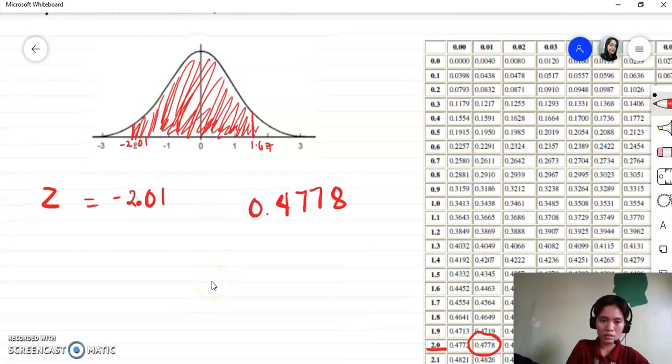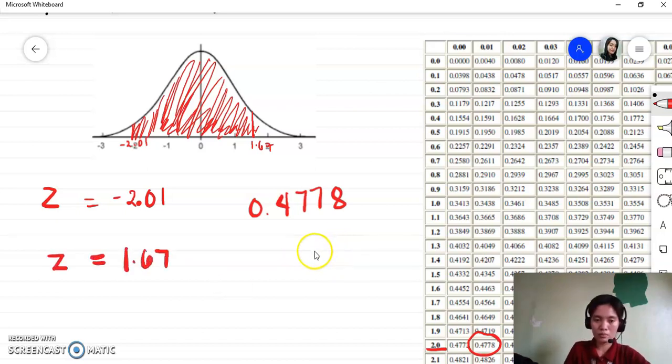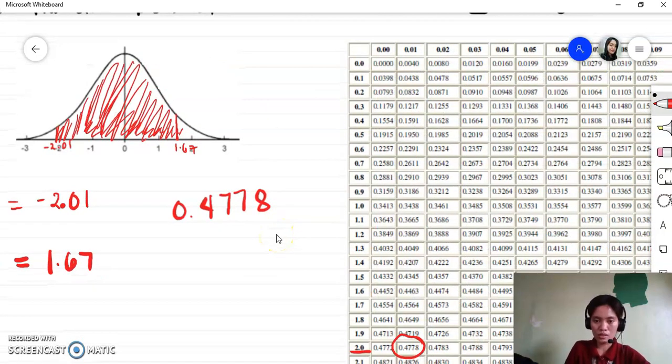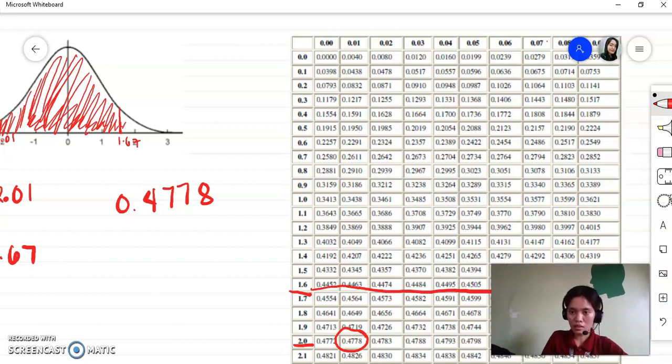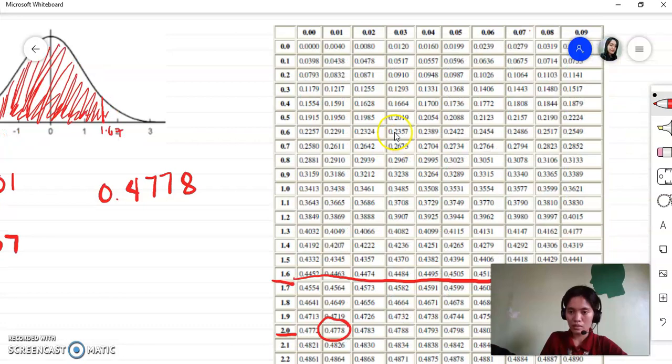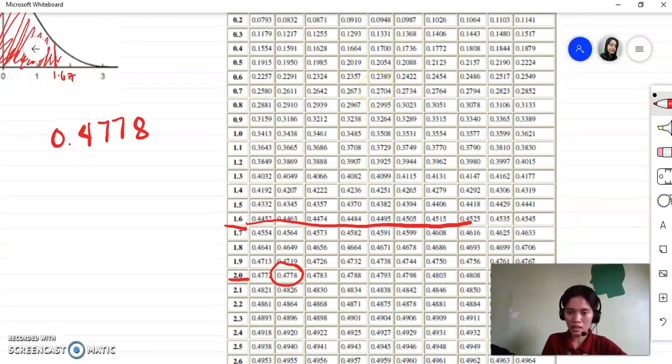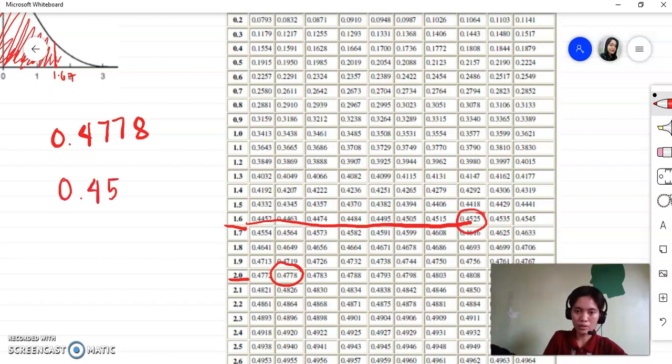How about Z equals 1.67? The first two digits is you have 1 and 6. Last digit is 7. So match it again. This is the area, so that's 0.4525.